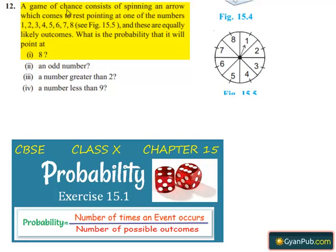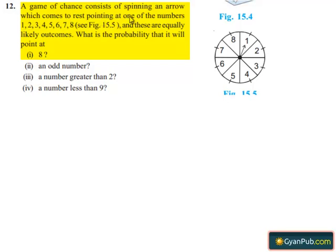Number 12. A game of chance consists of spinning an arrow which comes to rest pointing at one of the numbers 1, 2, 3, 4, 5, 6, 7, 8. These are equally likely outcomes. What is the probability that it will point at: first, 8; second, an odd number; third, a number greater than 2; and fourth, a number less than 9.